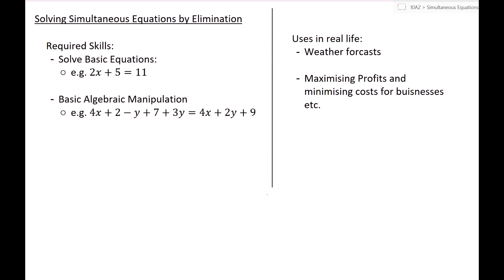Just a quick heads up, in order to do this make sure you know how to solve basic equations and also you're fine with basic manipulation, basically just collecting like terms. So here, 2 plus 7 gives you 9, 4x stays by itself and you've got minus y plus 3y giving you plus 2y. If you're fine with that, you should be fine with solving simultaneous equations today.